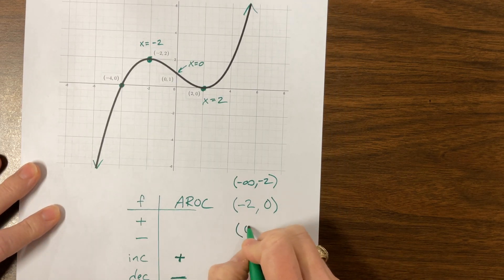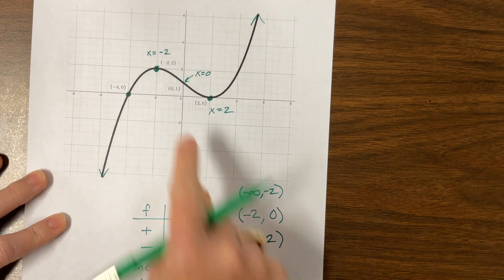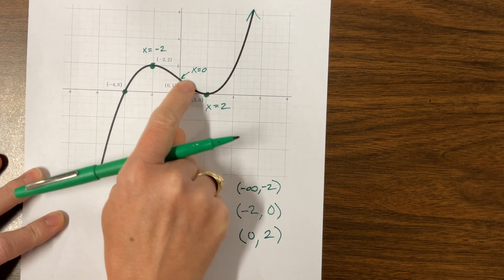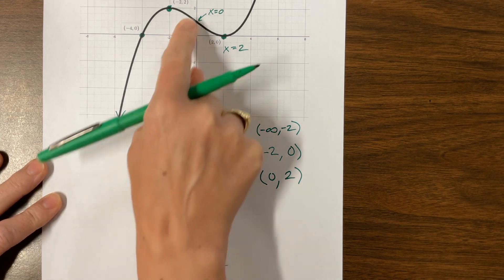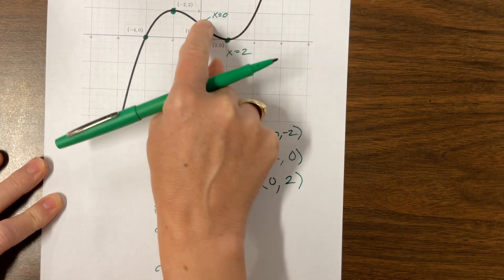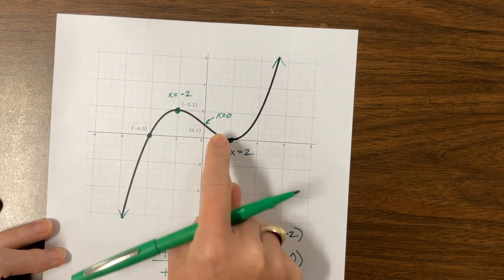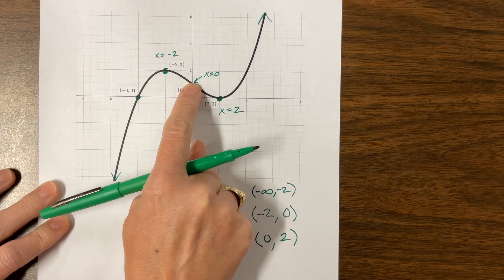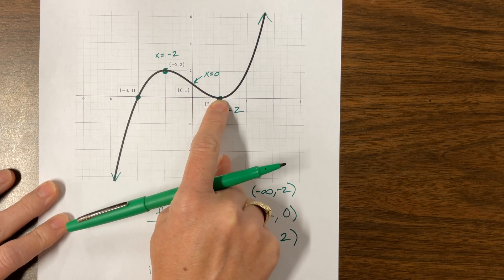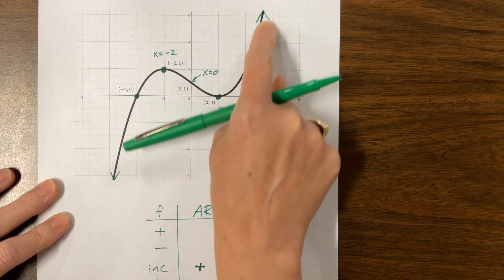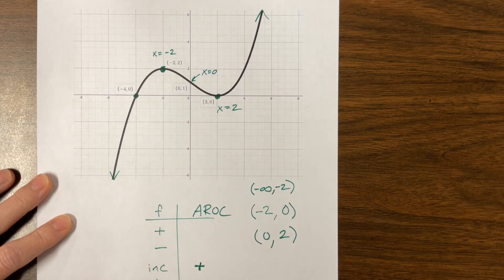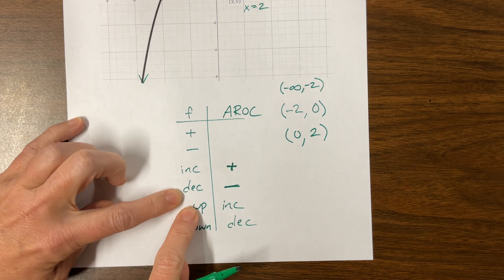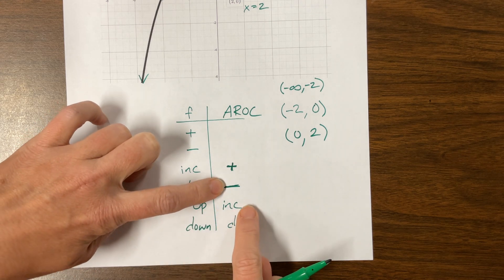The next piece goes from zero to two. From zero to two, our function is still decreasing, which means our average rate of change is negative, but we are now on the side that's concave up. The average rate of change is negative and increasing. The function is decreasing and concave up. So decreasing and concave up corresponds to the average rate of change being negative and increasing.